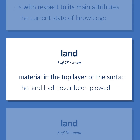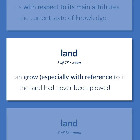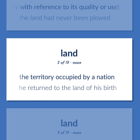Land: material in the top layer of the surface of the earth in which plants can grow, especially with reference to its quality or use — the land had never been ploughed. Also, the territory occupied by a nation — he returned to the land of his birth.